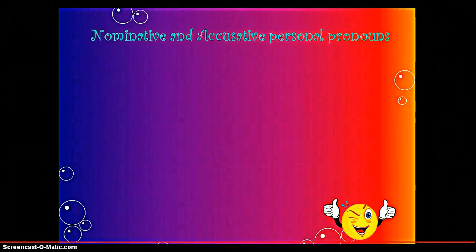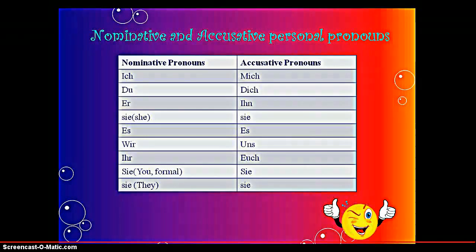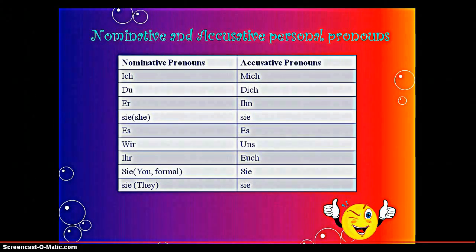Let us now learn the Nominative and Accusative personal pronouns. Nominative pronouns are: ich, du, er, sie, es, wir, ihr, sie, and Sie. And the Accusative pronouns: ich becomes mich, du becomes dich, er becomes ihn, sie for she becomes sie, es remains es, wir becomes uns, ihr becomes euch, sie and Sie for they becomes sie. We have to be very careful while using Accusative pronouns.